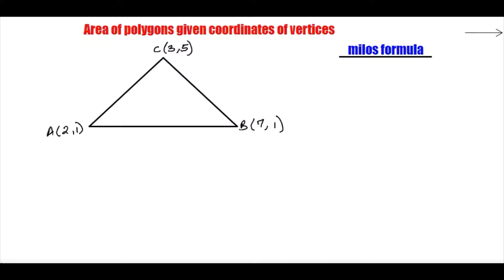So you can apply this formula to any kind of polygon, be it a triangle, be it a quadrilateral, be it a pentagon, a hexagon. It doesn't matter whether they are regular or irregular, so long as you can have the coordinates of the vertices. Let me take you through how we can find area of this particular triangle here.